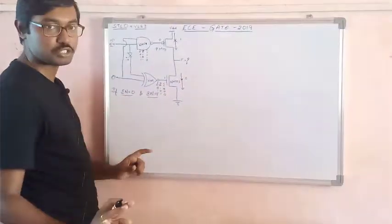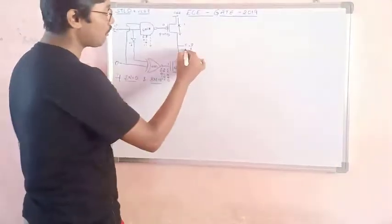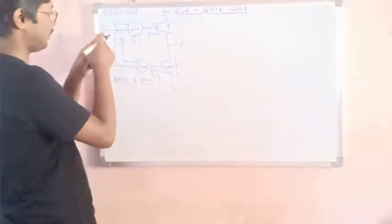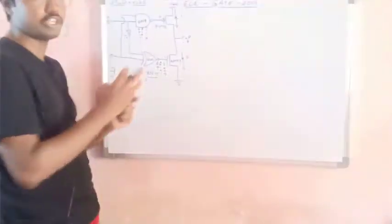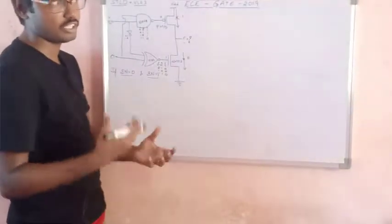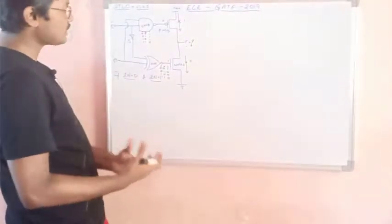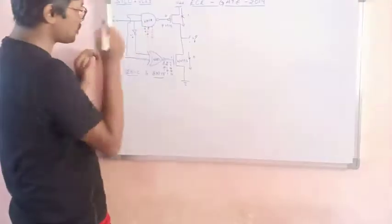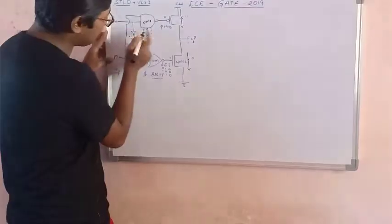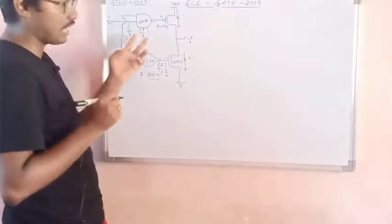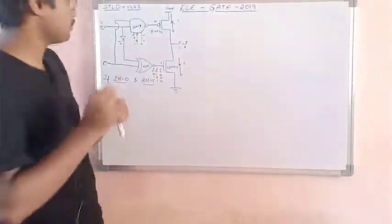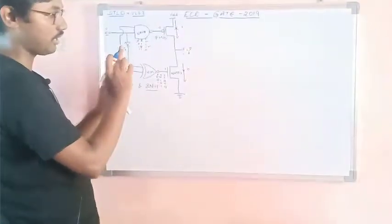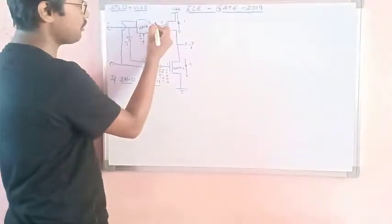For NMOS: 1 for ON, 0 for OFF. Now we need to find the value of F. When EN equals 0, the input to the NAND gate is 0 and D. If any input to a NAND gate is 0, the output is always equal to 1, regardless of D — D may be 0 or 1. So my output here will always be 1 when EN equals 0.